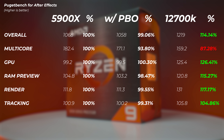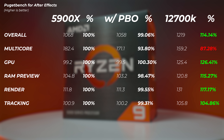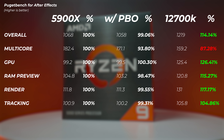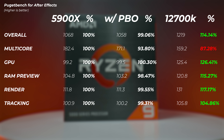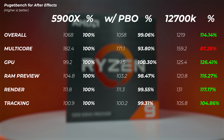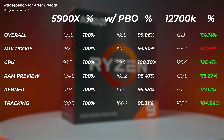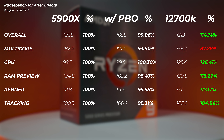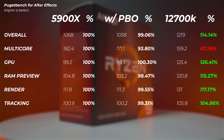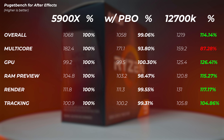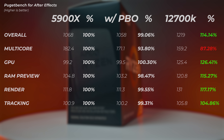Moving on to After Effects, enabling PBO again gives no performance increase, but the 12700K is 15% better in the overall score. In terms of multi-core score, the Ryzen is actually better — the 12700K is about 13% slower there. However, GPU performance is better on the Intel side again at 26%, and rendering performance is also better on Intel. So even in After Effects, I highly recommend the Intel CPU platform.